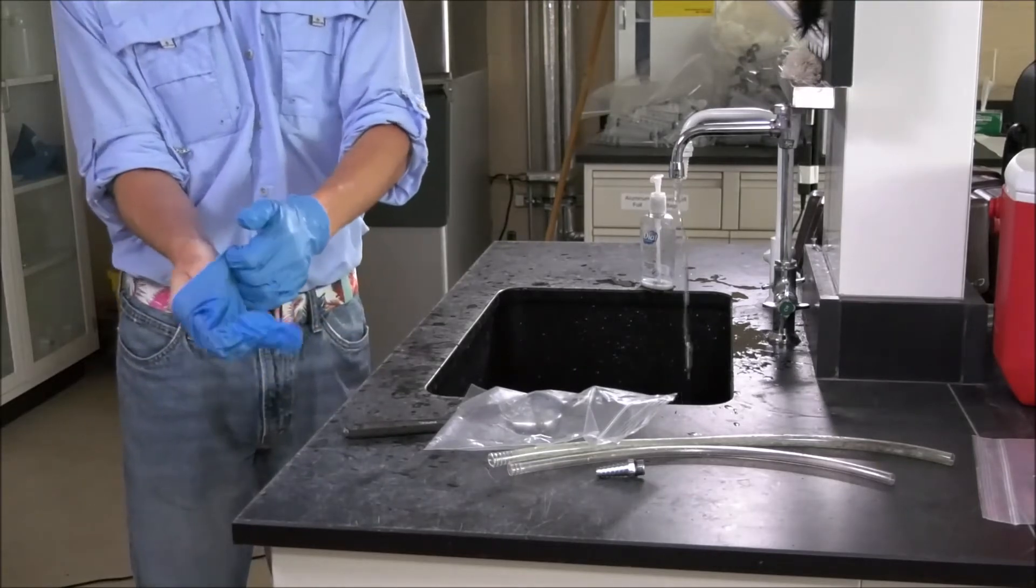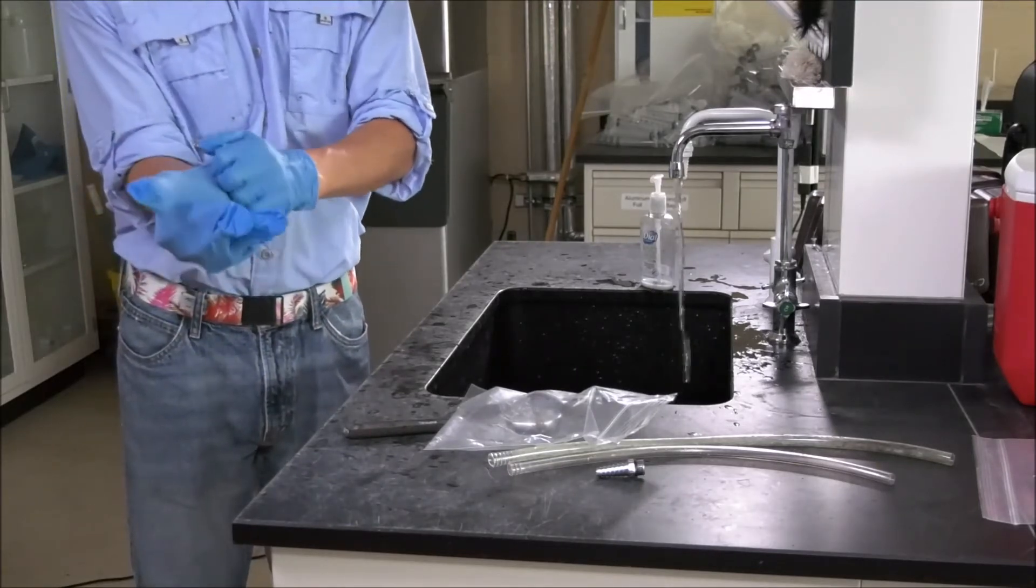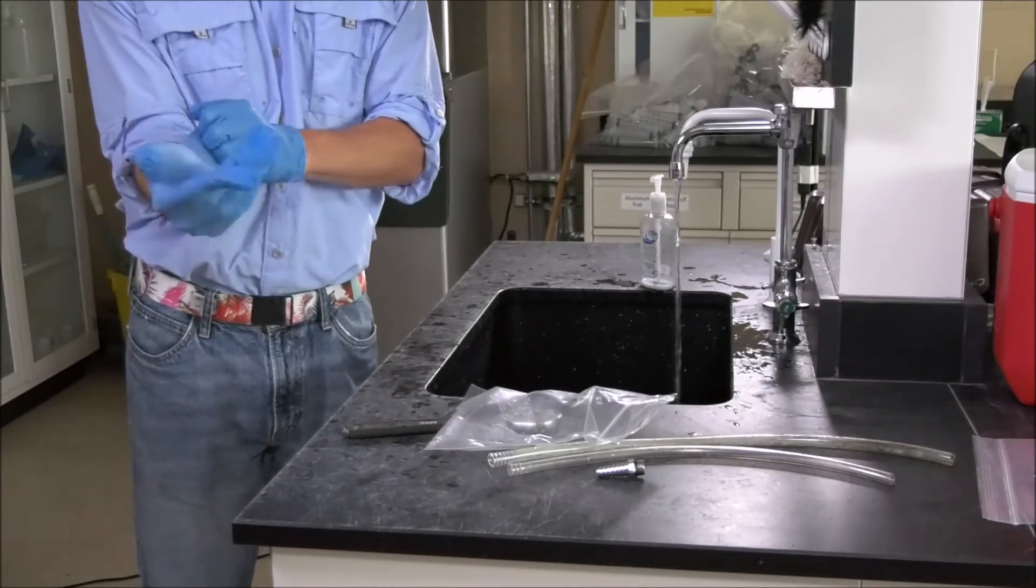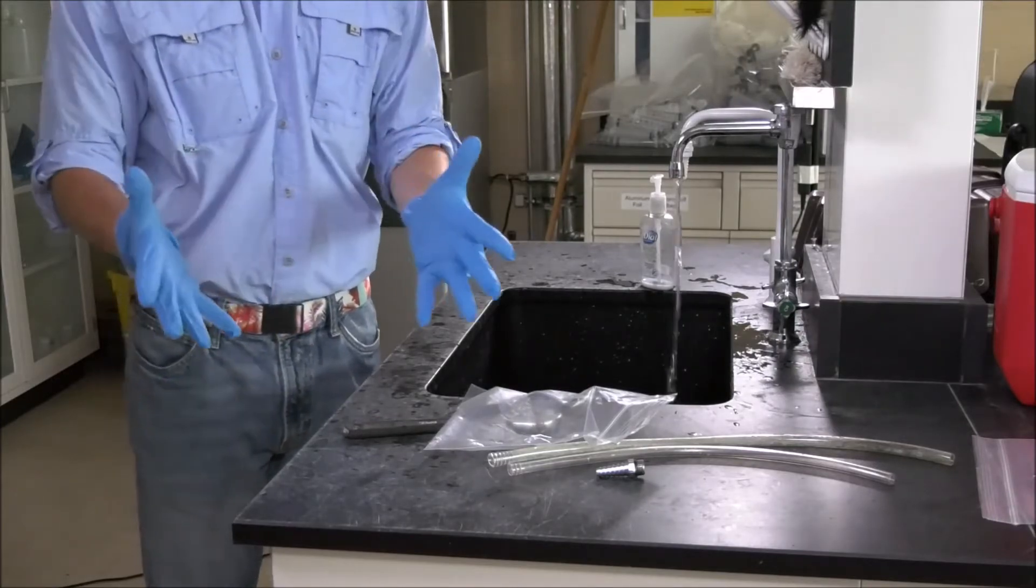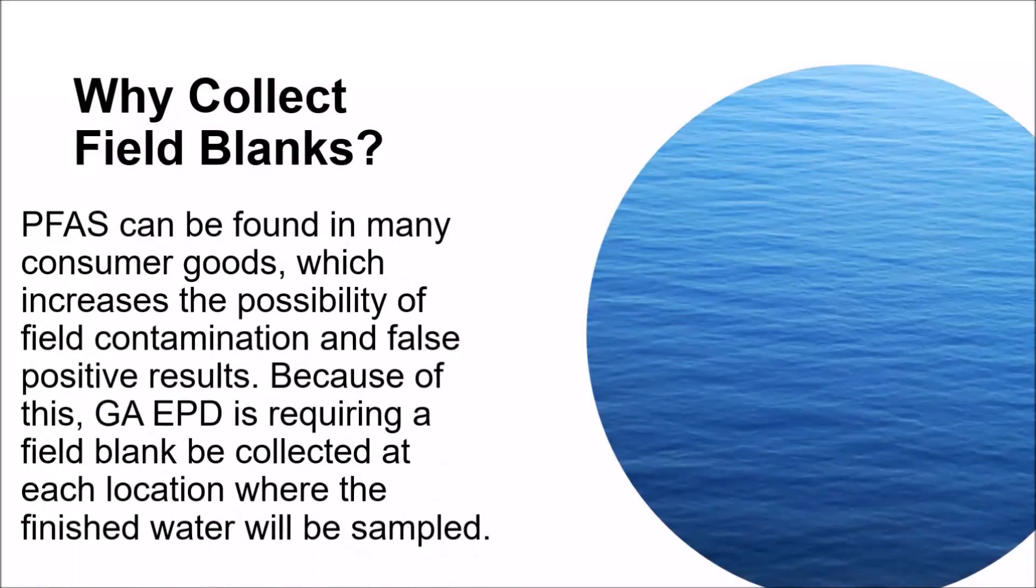The other person referred to as dirty hands will open and close the resealable plastic bag, which they will not put down during the sampling procedure. PFAS can be found in many consumer goods, which increases the possibility of field contamination and false positive results. Because of this, Georgia EPD is requiring a field blank be collected at each location where the finished water will be sampled.